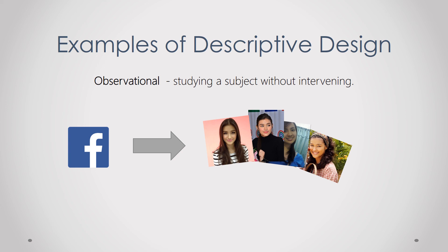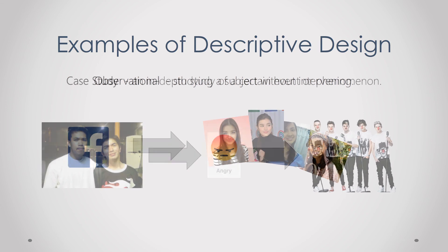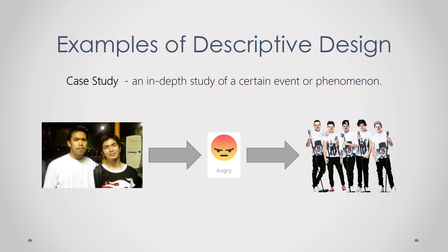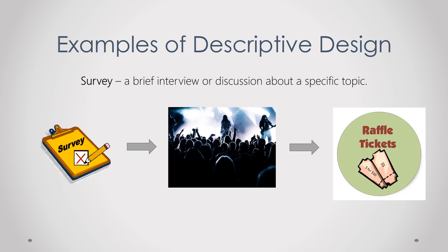Observational research involves studying a subject without intervening — for example, observing how often someone changes their profile picture on Facebook. A case study is an in-depth study of a certain event or phenomenon — for example, creating a case study on why your friend dislikes a particular band so much. A survey is a brief interview or discussion about a specific topic — for example, conducting a survey on how likely participants are to attend a concert if given free tickets.